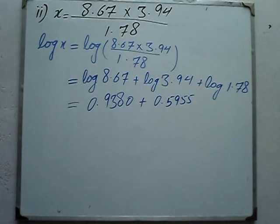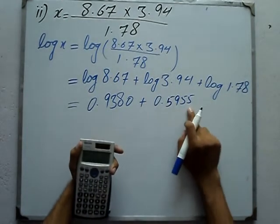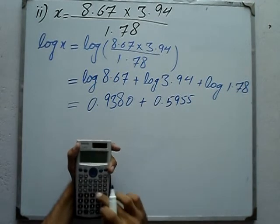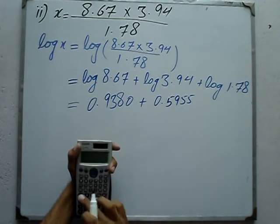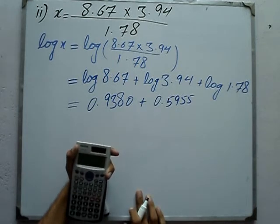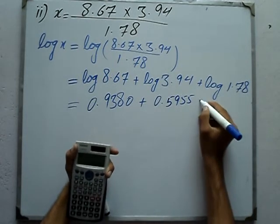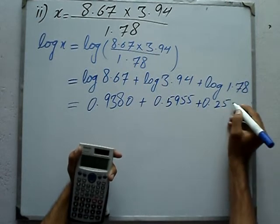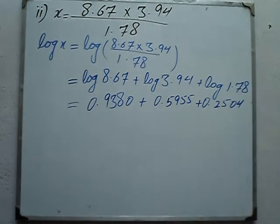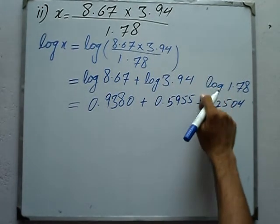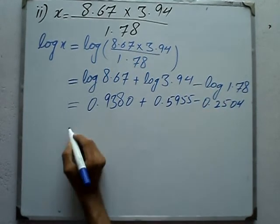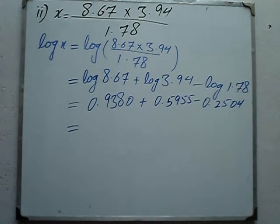Log 3.94 equals 0.5955. Next, log 1.78 equals 0.2504. Summing these values: 0.9380 plus 0.5955 minus 0.2504.